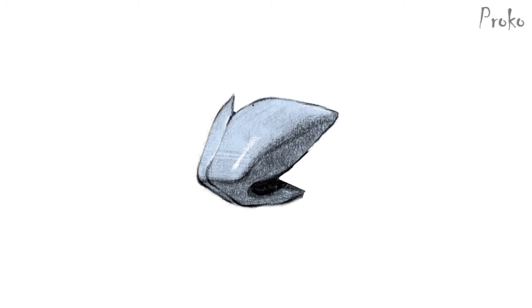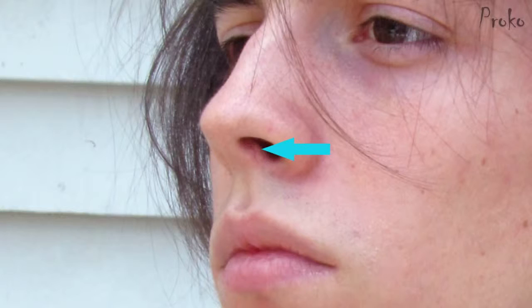The ball. Interesting to know that the ball of the nose is actually made up of two pieces of cartilage called the greater alar cartilage. Sometimes you will see the separation between these two pieces, and sometimes it will be too soft to see. These two pieces together make a rounded form that hooks in under itself at the septum, and you will typically see a bump where it connects to the skull inside the nostrils.